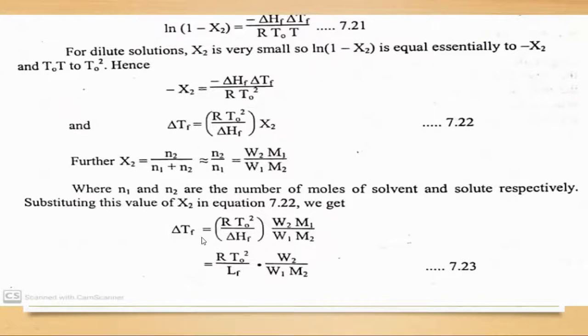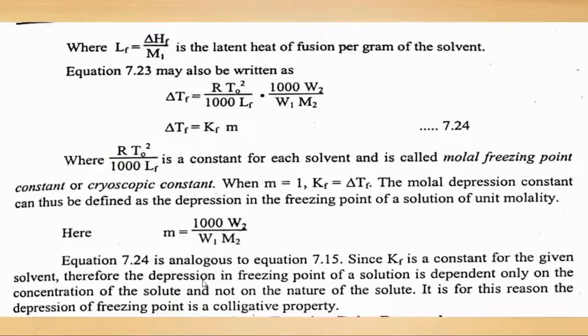So ΔT_f = (R × T_not²/ΔH_f) × (w_2/w_1) × (m_1/m_2). Taking m_2 to the other side, you get the molecular mass.